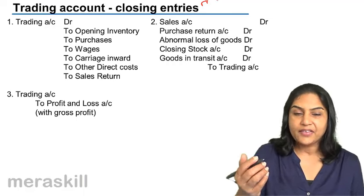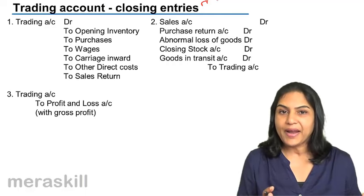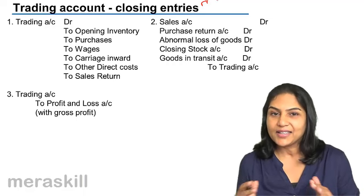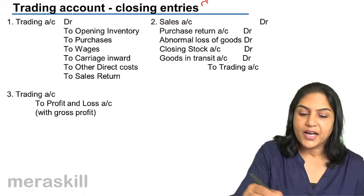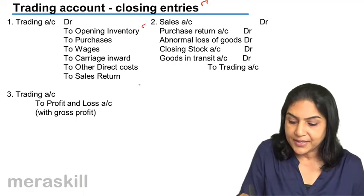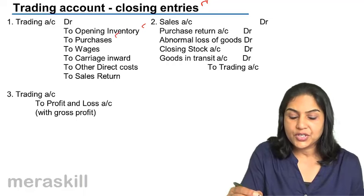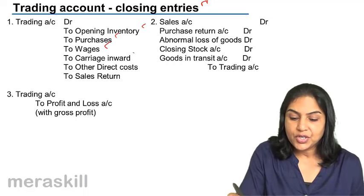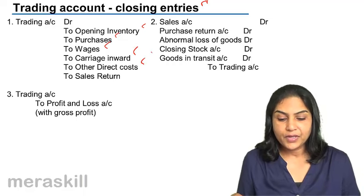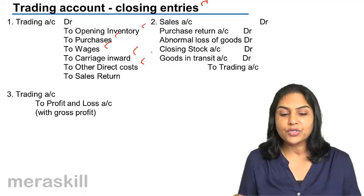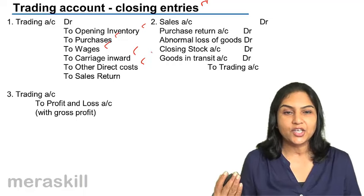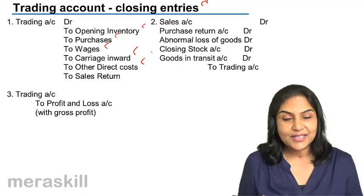So what are the entries? We have already prepared the ledger account. I am explaining now the accounting entries behind the trading account. Trading account is debited to opening stock — that is why we had opening stock on the debit side — to purchases, to wages, to carriage inward, to other direct costs. As for sales return, we don't normally debit the trading account with it. Instead, we show it as a deduction from sales so that we know the net sales.